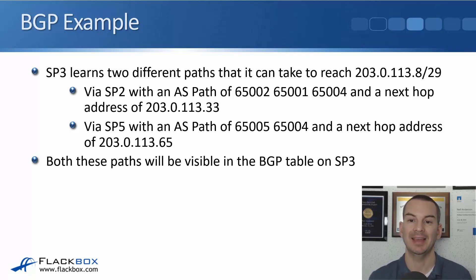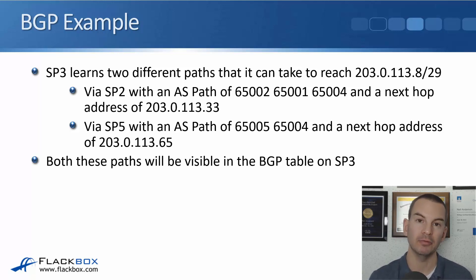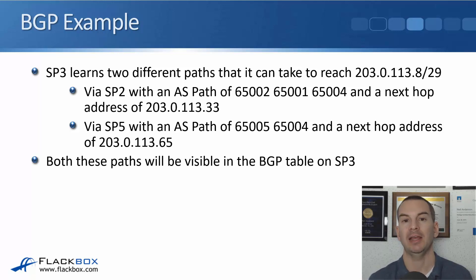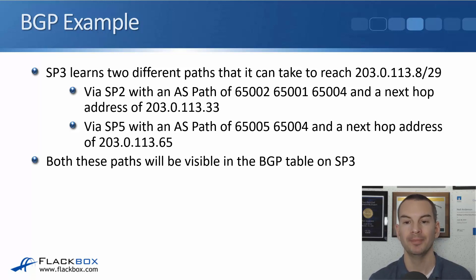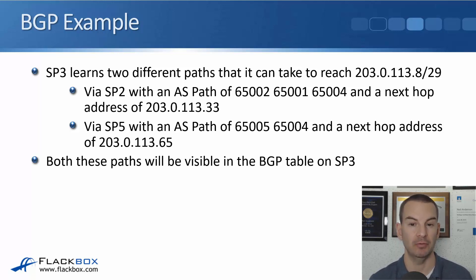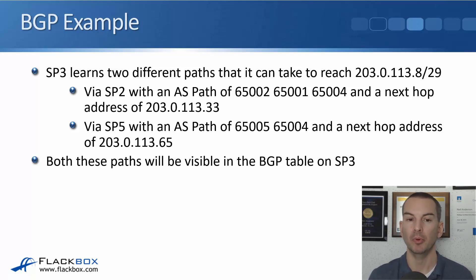When SP5 advertises to SP3, the AS path becomes 65005 65004. So SP3 has now learned two different paths to reach 203.0.113.8/29: via SP2 with AS path 65002 65001 65004 and next hop 203.0.113.33, or via SP5 with AS path 65005 65004 and next hop 203.0.113.65.